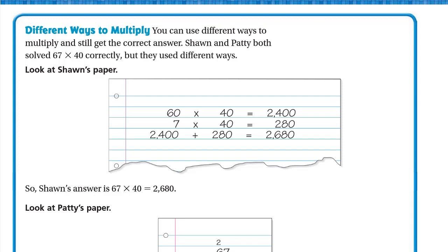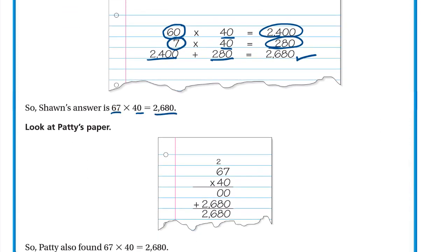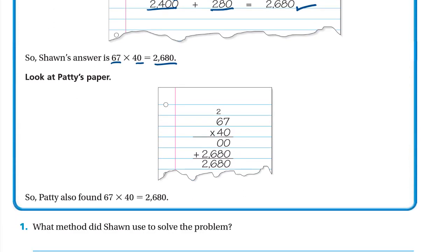Here are different ways to multiply and still get the correct answer. Sean and Betty both solved 67 times 40 correctly but used different methods. Sean's method: 60 times 40 is 2,400 and 7 times 40 is 280; then add 2,400 plus 280 to get 2,680.